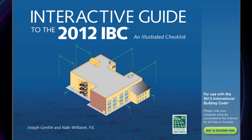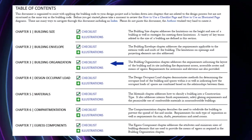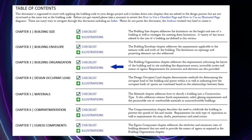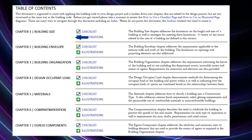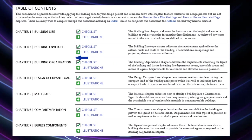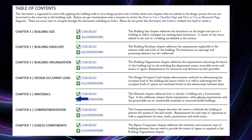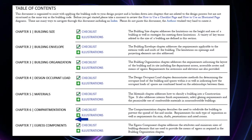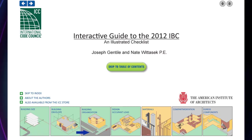Towards this end, the interactive guide provides checklists and supporting sets of illustrations that are broken out into categories that work through the code requirements from the largest design decisions to smaller ones. You can see these categories along the bottom of this welcome page and in the table of contents.